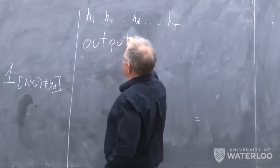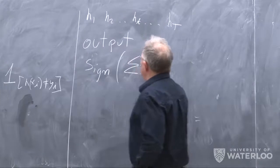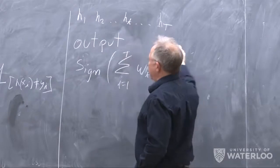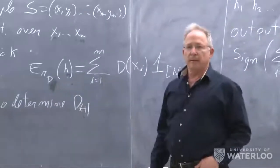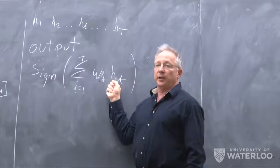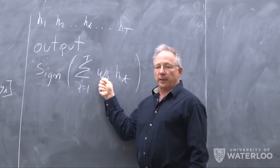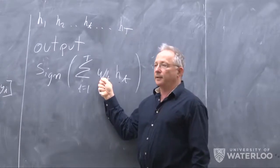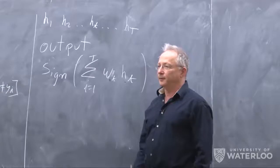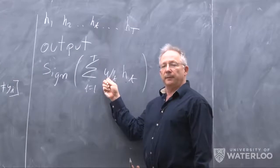The output classifier is the sign of the sum of W_t · h_t from t=1 to T. The weights W_t tell us how much we listen to the advice of each h_t. The W_t's are usually inversely proportional to the error — h_t's that made small error get more weight and more respect, while h_t's that made a lot of error get small weight.